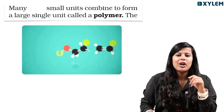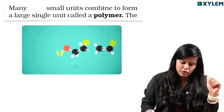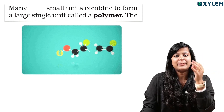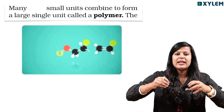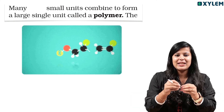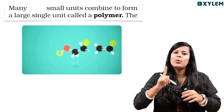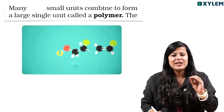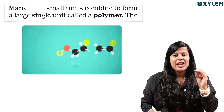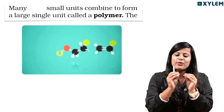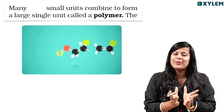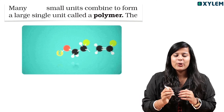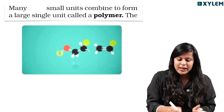What do you mean by polymer? What is the definition of polymer? Many small units combined to form a large single unit is called a polymer. The example is a jackfruit. Jackfruit is made of many small units combined to form a single unit.